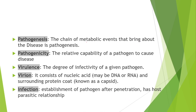Now here some terminologies and definitions are given. First is pathogenesis: the chain of metabolic events that bring about the disease is known as pathogenesis — how any disease develops and how it originates. Next term is pathogenicity: the capability by which a pathogen develops and causes disease.